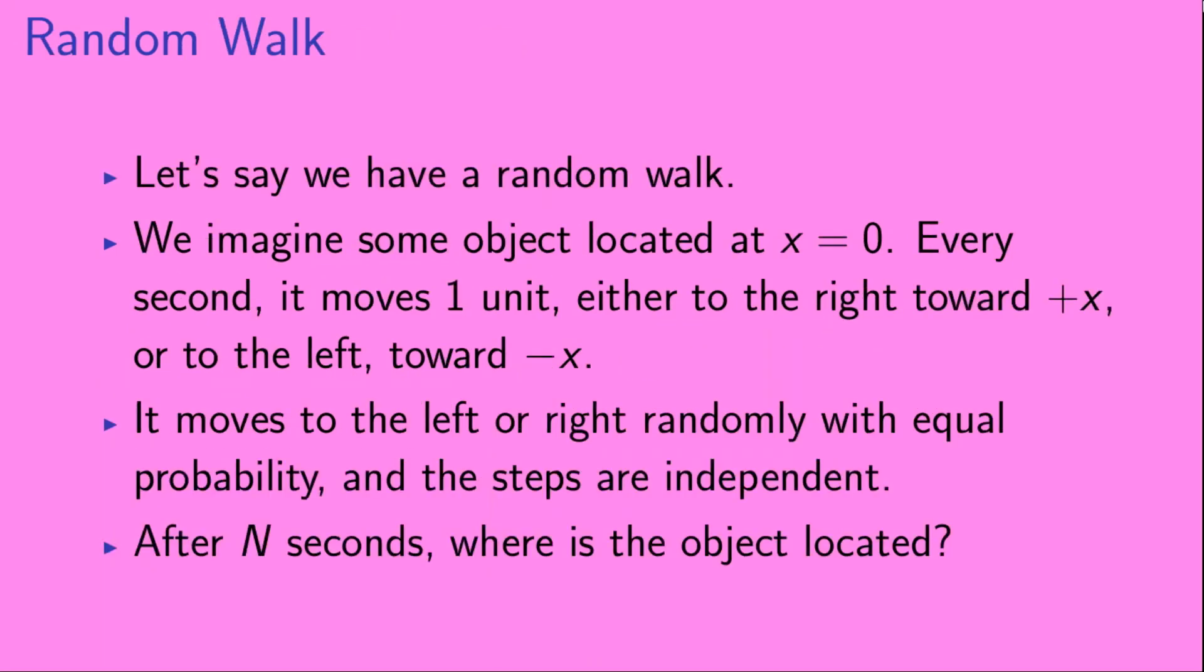So, let's say we have a random walk. We imagine some object located at x equals 0. Every second, it moves one unit, either to the right, toward positive x, or to the left, toward negative x. It moves to the left or right randomly, with equal probability, and the steps are independent. After n seconds, where is the object located?